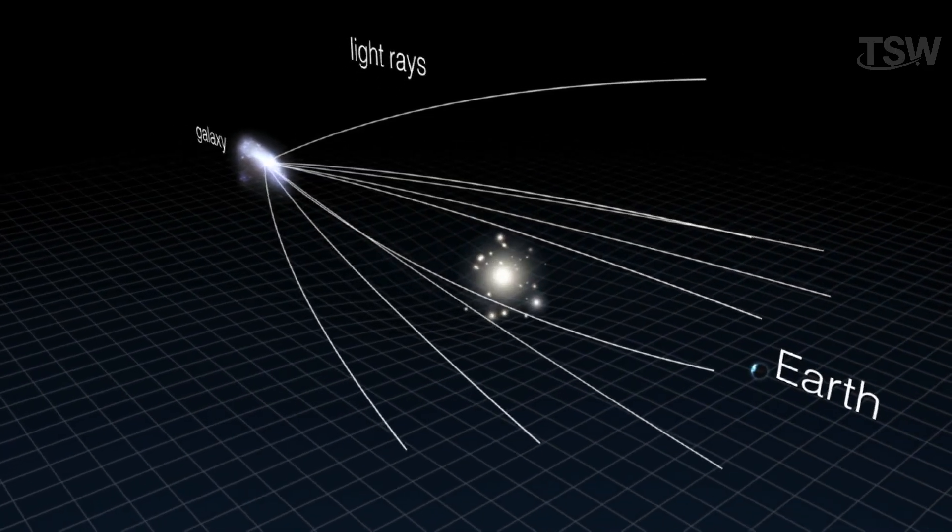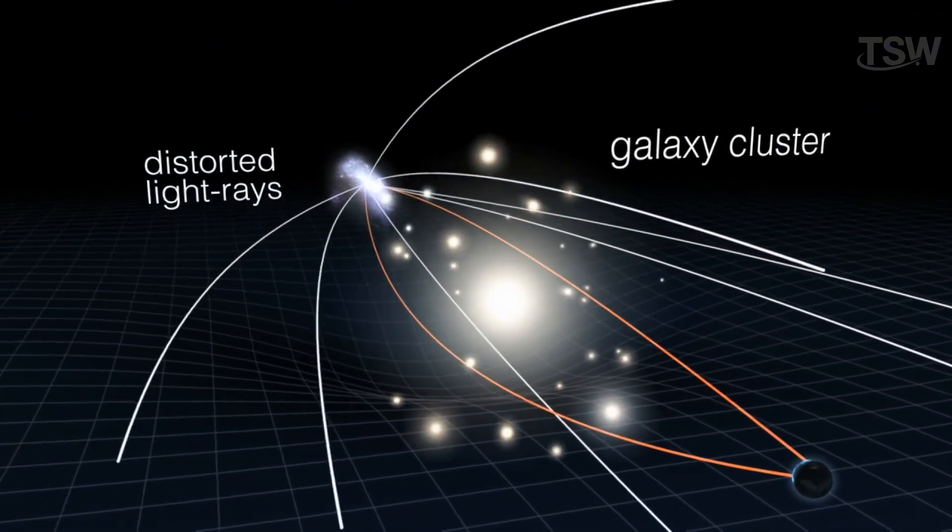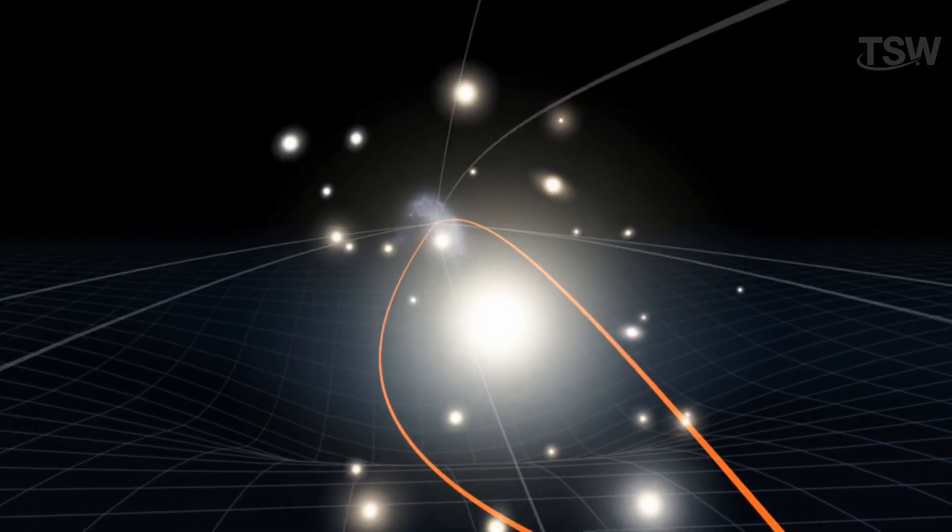This distortion doesn't happen by chance. It's as if space acts like a giant magnifying lens. Except, instead of being made of glass, this lens is made purely of gravity.